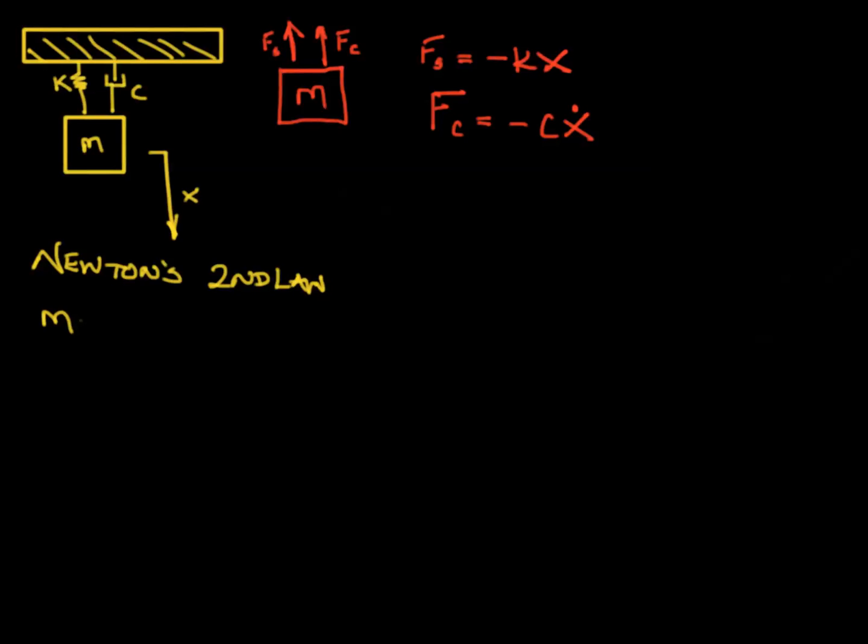That says MA or MX double dot in this context is equal to the spring force plus the damping force. Substituting minus K X minus C X dot and we choose to rewrite it as M X double dot plus C X dot plus K X is equal to zero. This is our equation of motion that we need to solve.